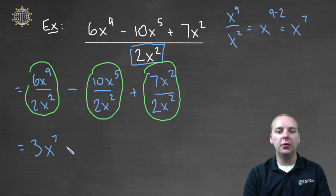The second term, ten over two makes five. X to the fifth divided by x to the second would be x to the third.